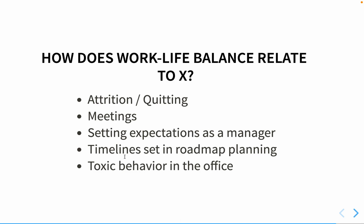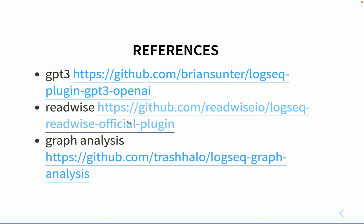Those are ideas I had never consciously thought about before. That random thought about glass and plastic balls created a new concept, and making connections using the algorithm brought together new ideas for writing. The three plugins I called out are: the GPT-3 plugin for topic inspiration, Readwise for pulling content from Twitter and blogs into my notes, and the Graph Analysis plugin for surfacing new ideas from connections. I hope this helps.